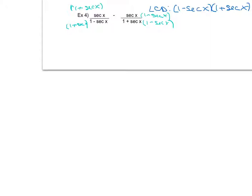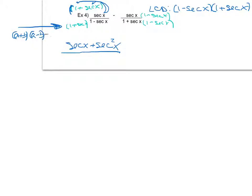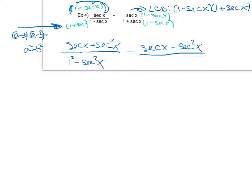To get the least common denominator, I multiply the top and bottom of the first fraction by one plus secant x, and the top and bottom of the second fraction by one minus secant x. Distributing the secant x in the first numerator gives me secant x plus secant squared x. On the bottom, I notice the denominator is in the form (a + b)(a − b), which foils to a squared minus b squared, giving me one minus secant squared x. The second numerator distributes to secant x minus secant squared x.